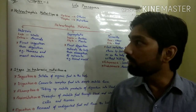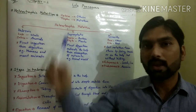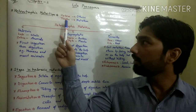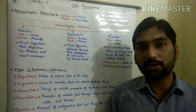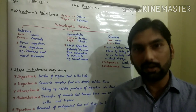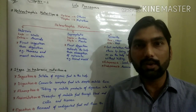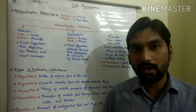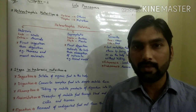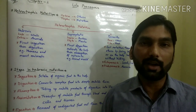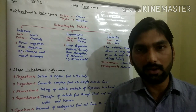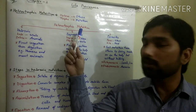Today we start the next mode of nutrition — heterotrophic nutrition. 'Hetero' means others and 'troph' means nutrition, so heterotrophic nutrition is the mode in which organisms derive their nutrition from other organisms' bodies. All animals in our surroundings, including humans, are dependent on other organisms for food, and hence such organisms are known as heterotrophs.